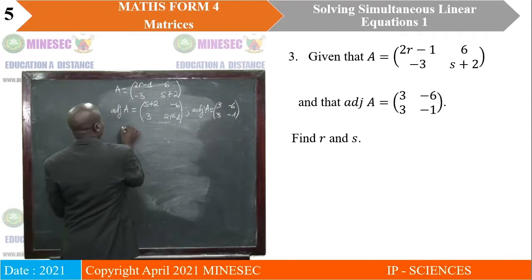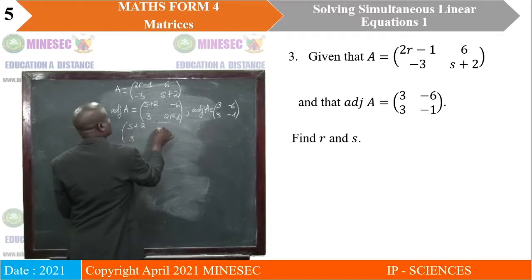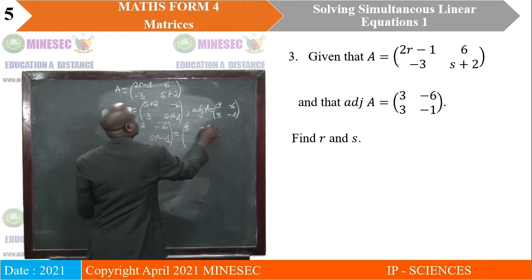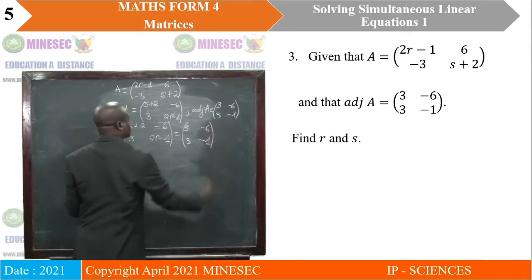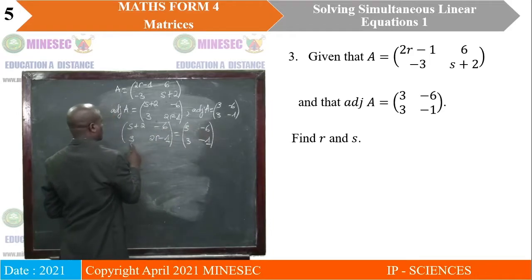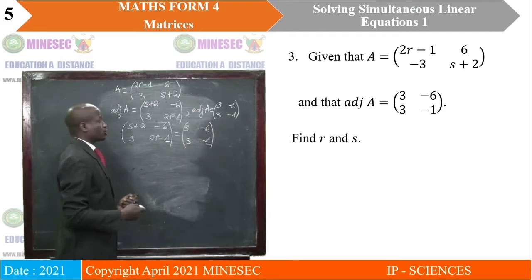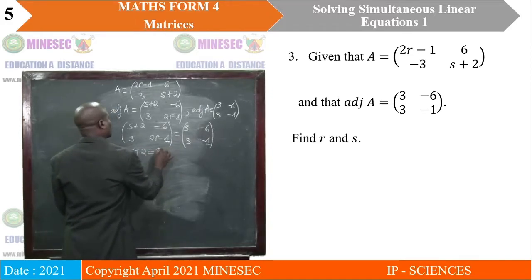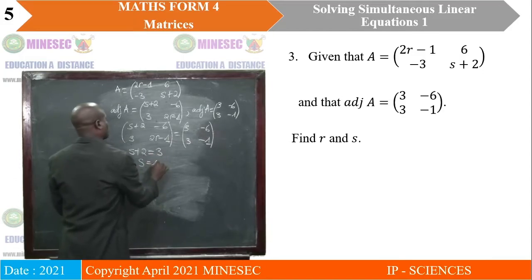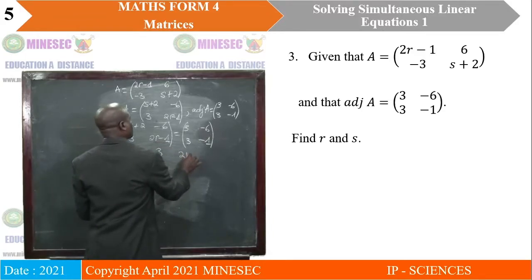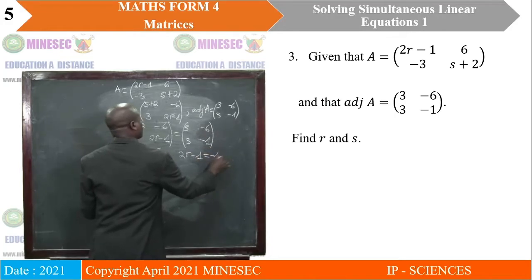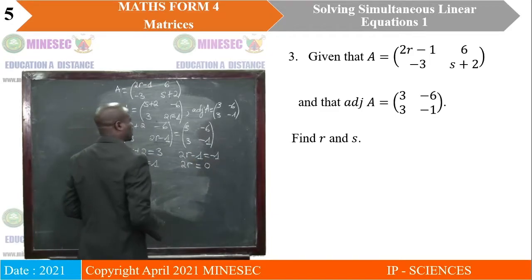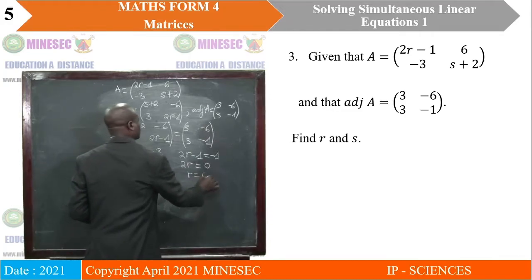So we have [S+2, 3; -6, 2R-1] is equal to [3, -6; 3, -1]. When two matrices are equal, their corresponding elements are equal. So S+2 is equal to 3, which gives us S as 3 minus 2, which is 1. Also, 2R-1 will be equal to -1, which means 2R is equal to 0. When you add 1 to both sides, R is equal to 0 divided by 2, which gives us 0.